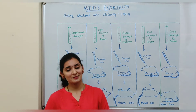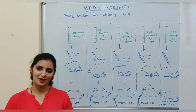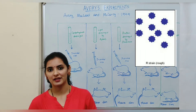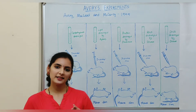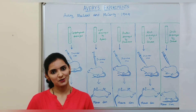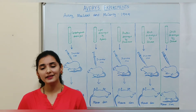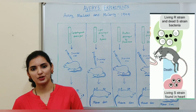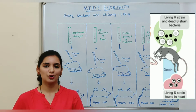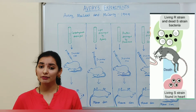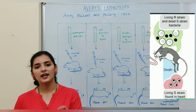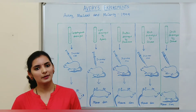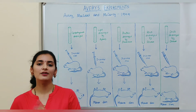Griffith used two strains of Diplococcus pneumoniae — the S strain and the R strain — and conducted a series of experiments on mice. In one experiment, he injected a mixture of heat-killed S strain and live R strain into a mouse. The result was that the mouse died of pneumonia, and Griffith was able to extract live S strain from that dead mouse, which surprised him.